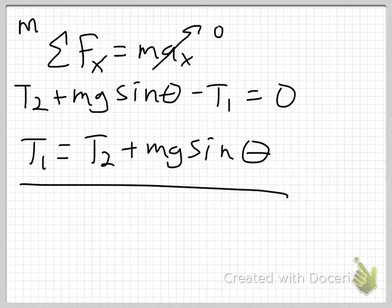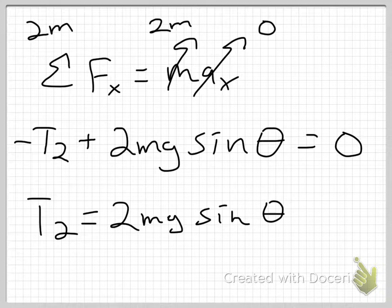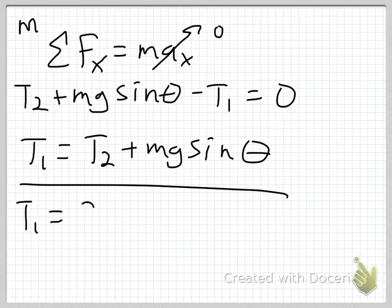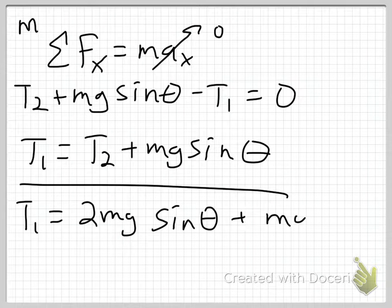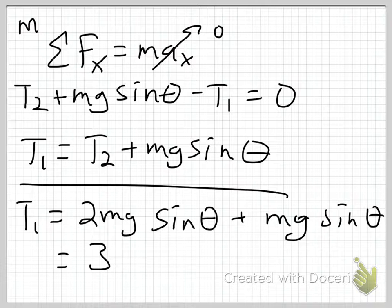T1, what was T2 again? Well, I've forgotten, and I'm doing this on three different pages. So, it is 2mg sine theta from here. So, I'm going to go substitute that in. 2mg sine theta, that's my T2, plus mg sine theta. So, if I add that together, what I get out of that is 3mg sine theta.